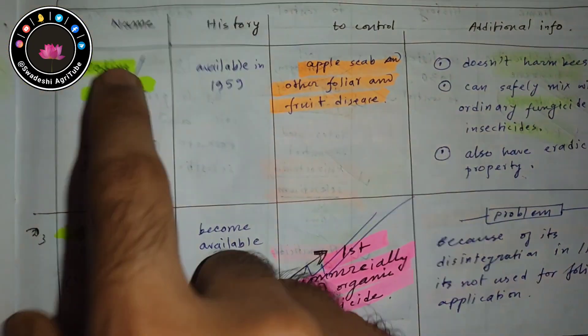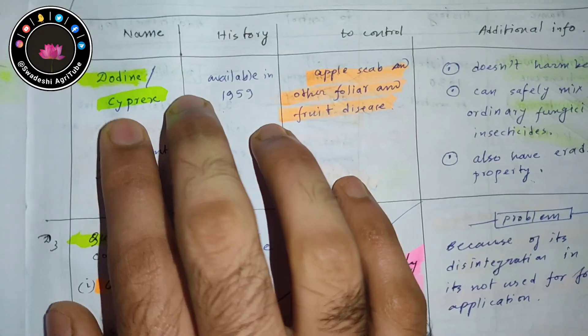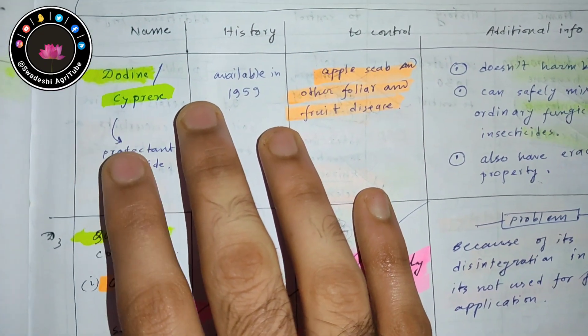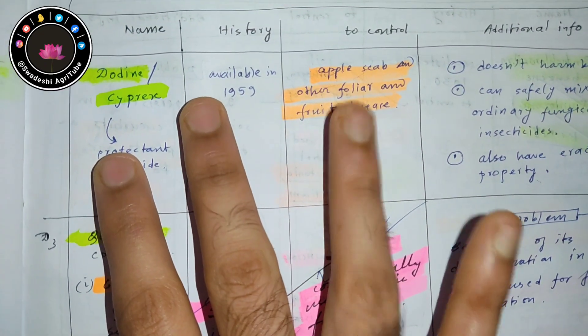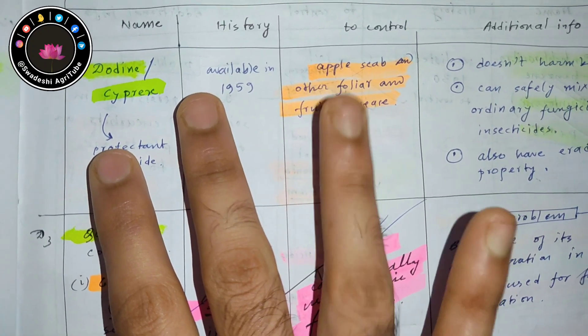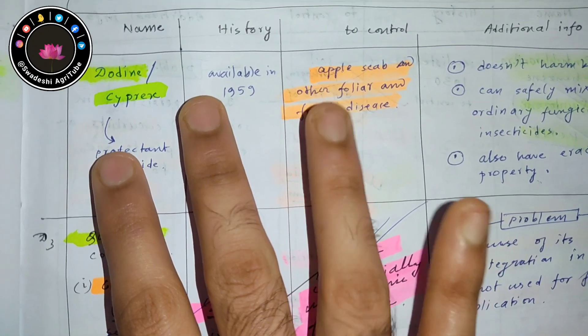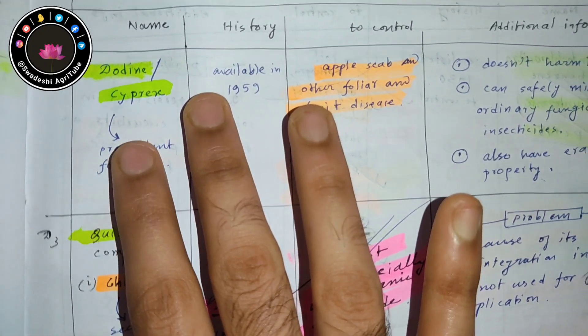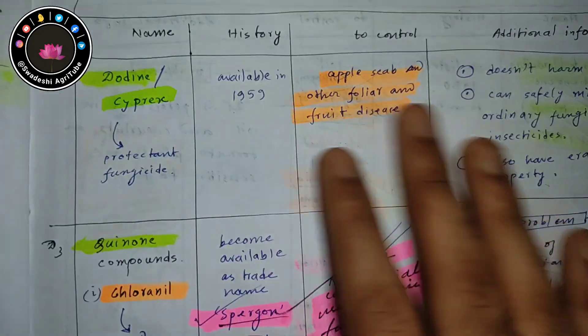The second organic compound is dodine. Dodine is also one organic fungicide which is used to control apple scab. Remember these two things: apple scab can be controlled by two organic fungicides—dodine and glyodin. There is nothing more to remember here.